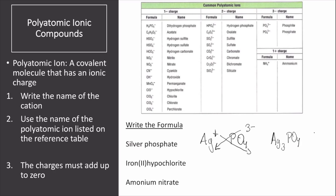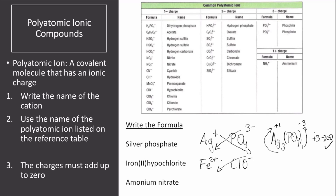We can check for neutrality by writing the implicit 1s and parentheses: plus 1 for silver and negative 3 for the phosphate ion. Multiplying 3 times positive 1 gives plus 3, and 1 times negative 3 gives negative 3 — so this equals zero and is neutral. The next one is iron(II) hypochlorite. Iron is 2+ from the name, and hypochlorite is ClO⁻ with a negative 1 charge. Crossing the charges gives Fe(ClO)₂.